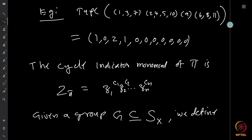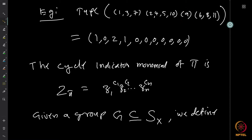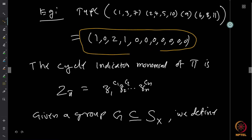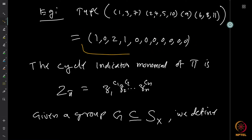The type of the permutation given by the product of cycles (1 3 7), (2 4 5 10), (9) and (6, 8, 11) is of type (1, 0, 2, 1, 0, 0, 0, 0, 0, 0, 0). There is precisely one 1-cycle, no 2-cycles, two 3-cycles (1 3 7) and (6 8 11), one 4-cycle (2 4 5 10), and no larger cycles — all values up to 11 are zeros since the number of elements is 11.